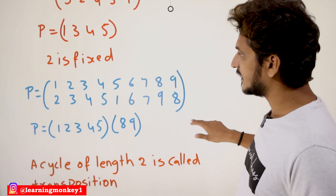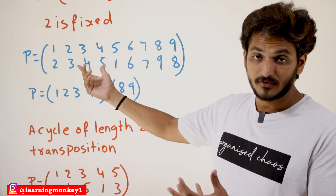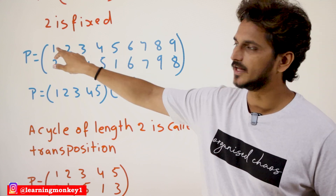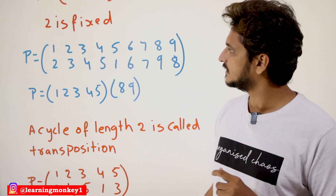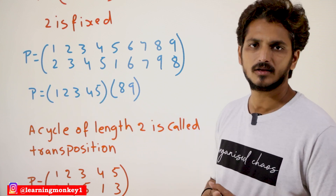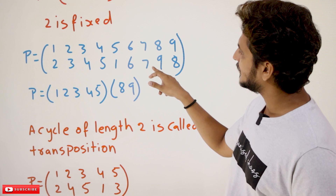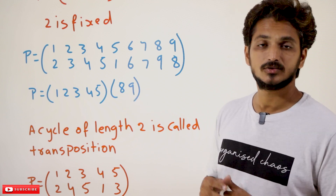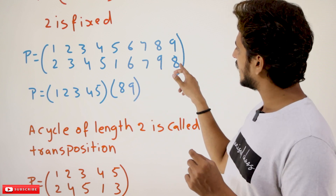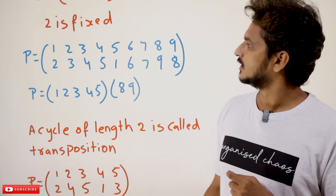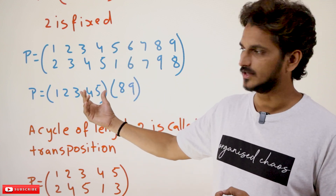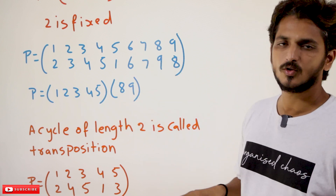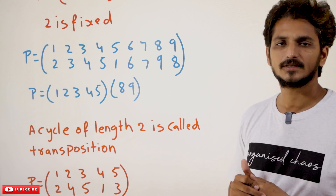Take another permutation and identify the cycles in it: 1→2, 2→3, 3→4, 4→5, 5→1, 6→6, 7→7, 8→9, 9→8. The elements 1,2,3,4,5 form one cycle (1 2 3 4 5), and 8 and 9 form another cycle (8 9). Since 6 and 7 are fixed, no need to show them. This permutation is represented as (1 2 3 4 5)(8 9).